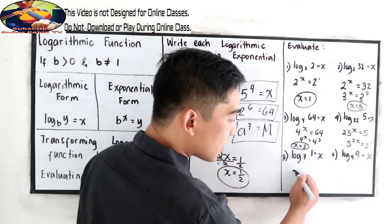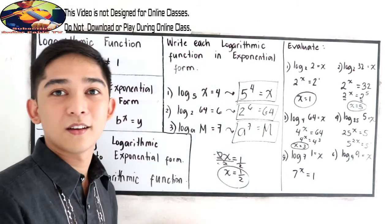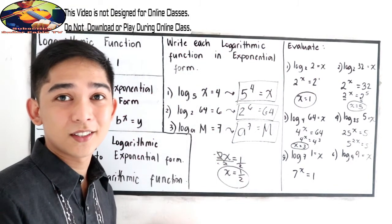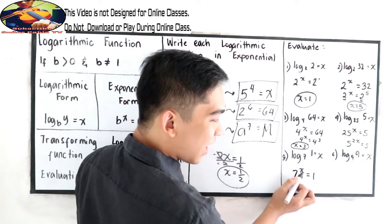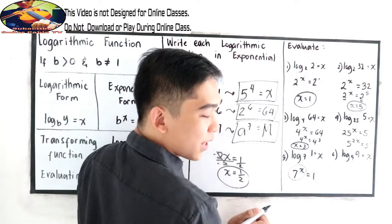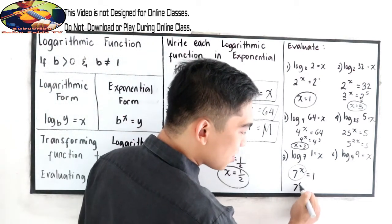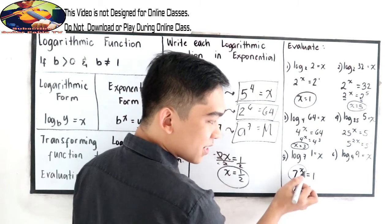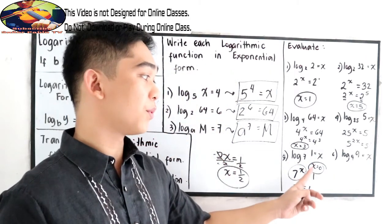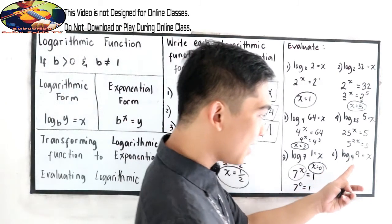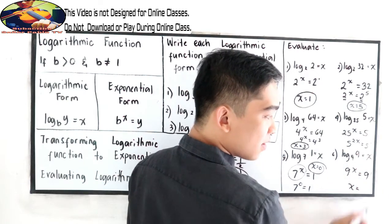Number 5: 7 raised to x is equal to 1. We know that any number raised to 0 is equal to 1. So if we have 7 raised to 0, that equals 1. Therefore x is equal to 0, meaning the value of log 1 base 7 is equal to 0. And for log 9 base 9: 9 raised to x is equal to 9, so x is equal to 1, since 9 has an exponent of 1.